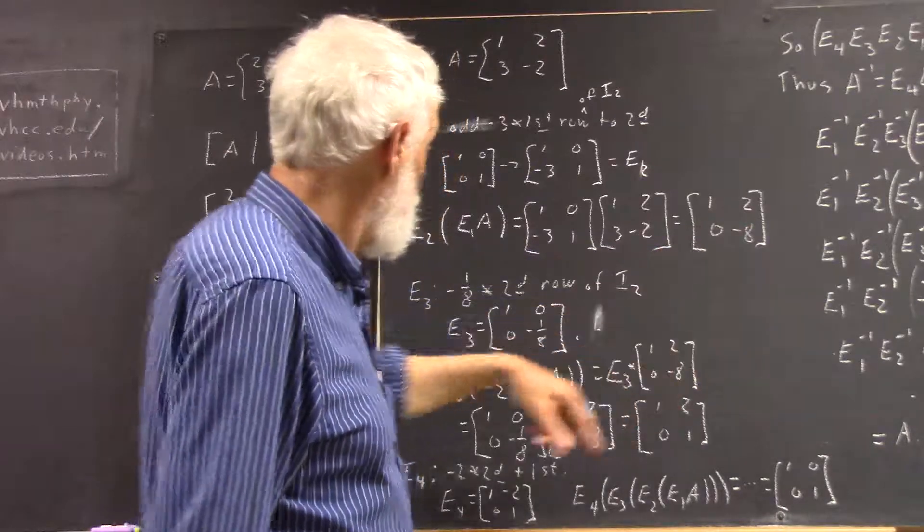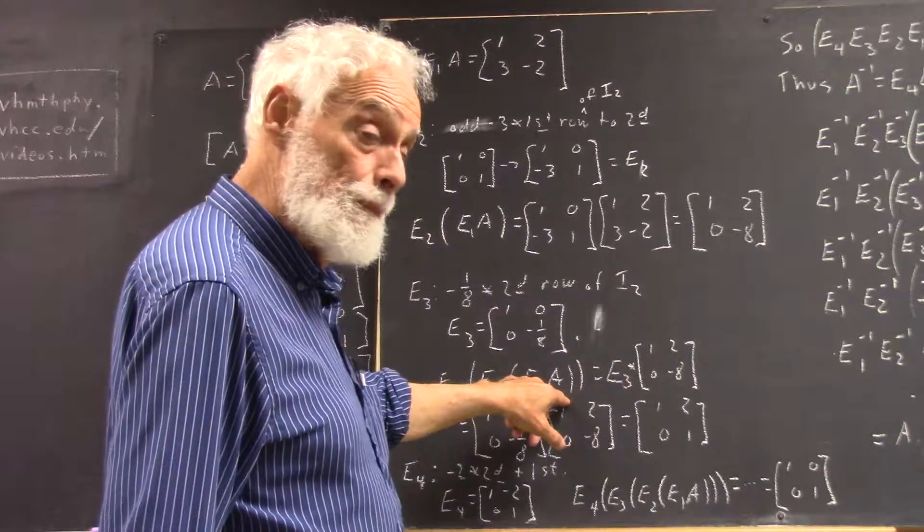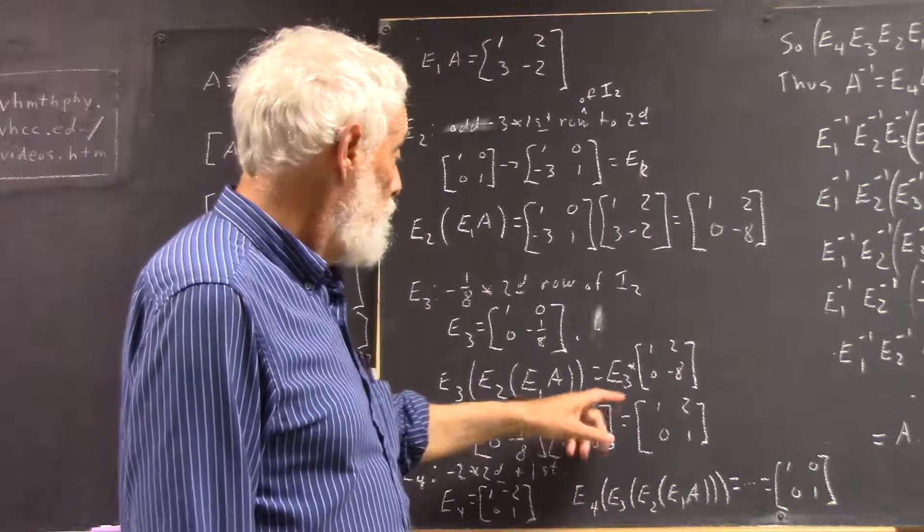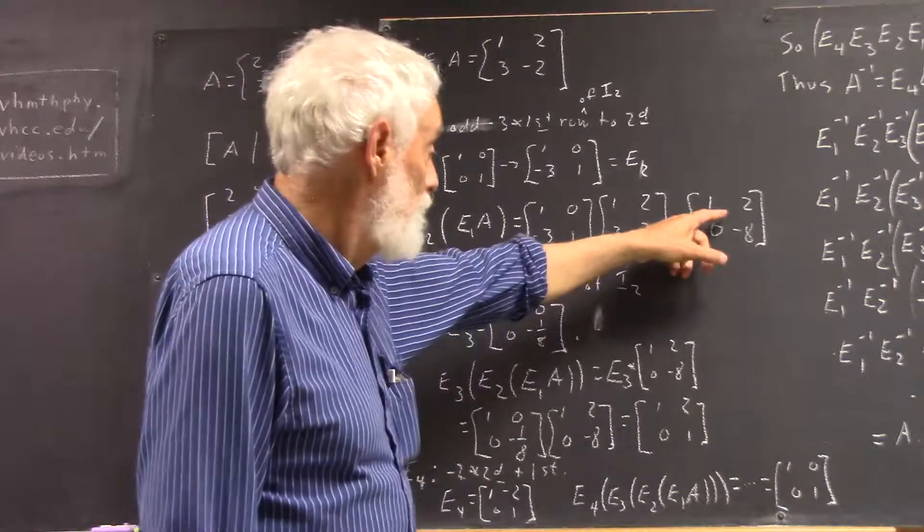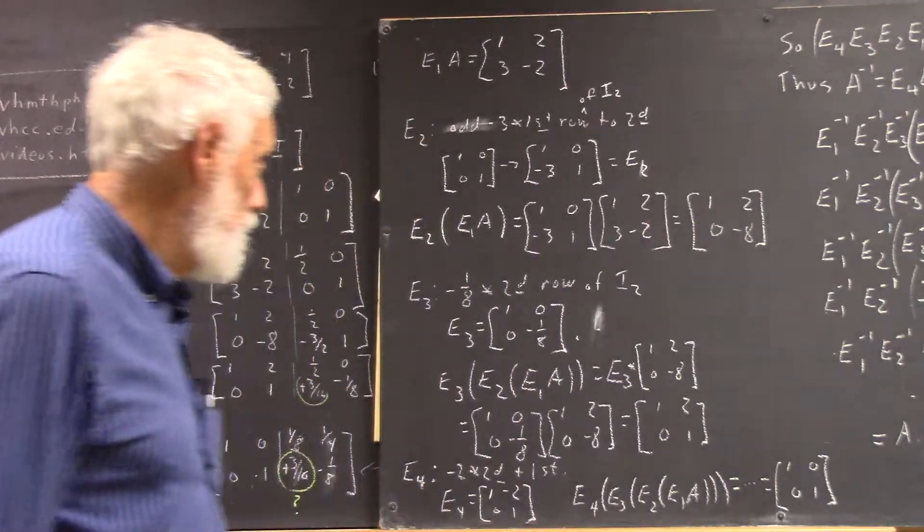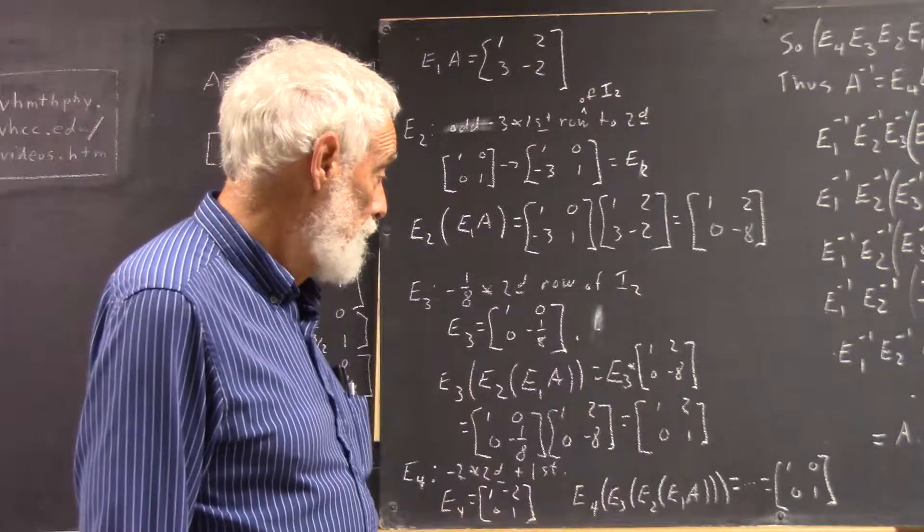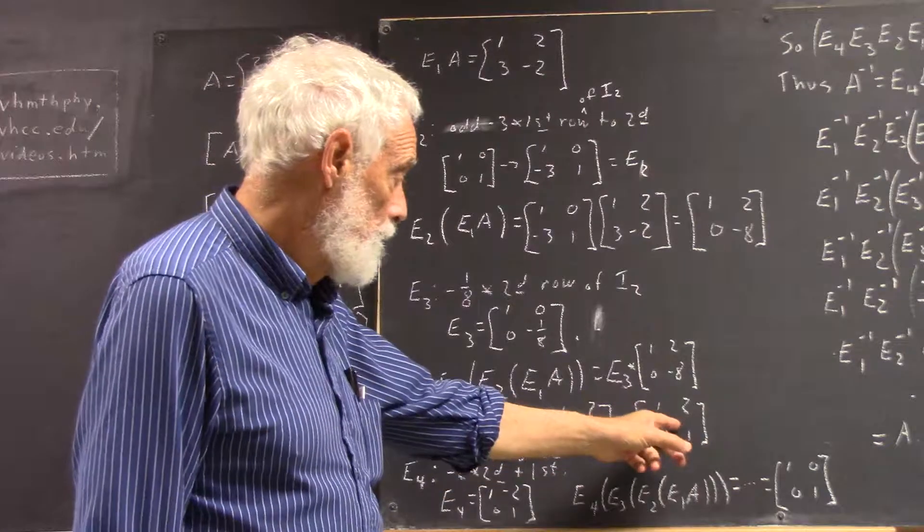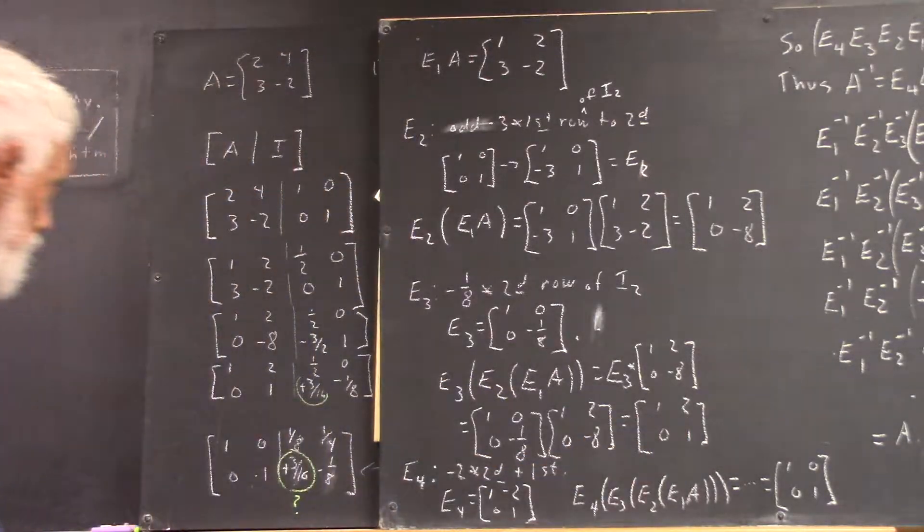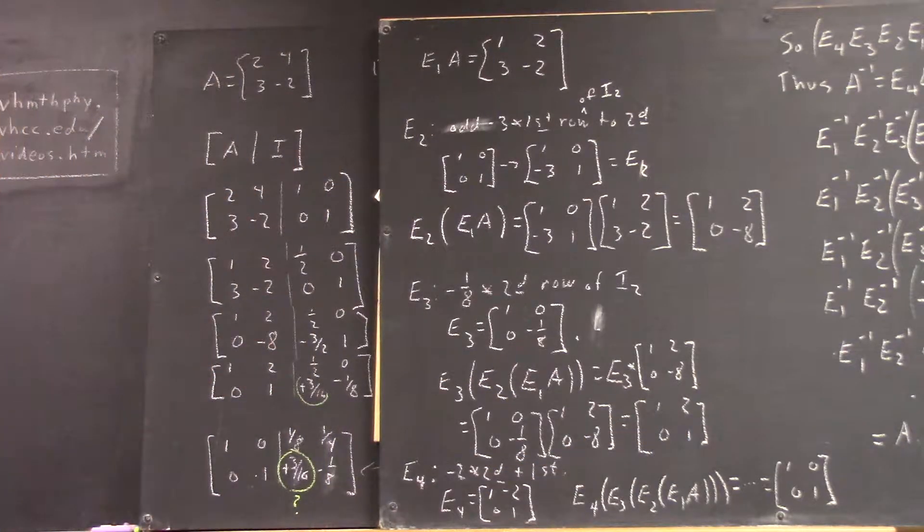And this was our E2 times E1A matrix. So, we get E3 times this. And there's our E3, there's this matrix. And you can verify that the result is this, which is identical to this.